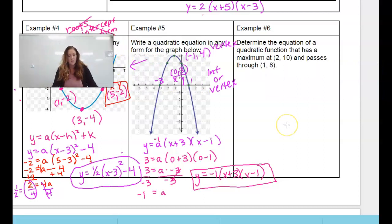All right. My last example 6 says determine a quadratic equation. I know I have a maximum at 2, 10. I just like to graph it to get an idea. And let's say that's 10. So that's my maximum. And it goes through 1, 8. So that means it opens down. Well, since I have a vertex and I have a point, I'm going to pick vertex form.